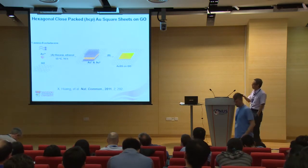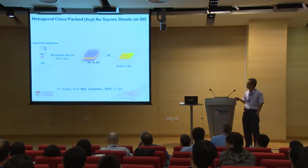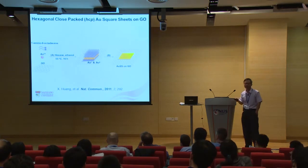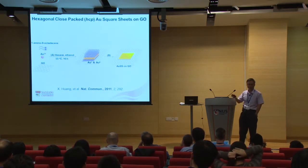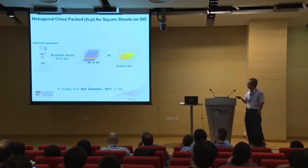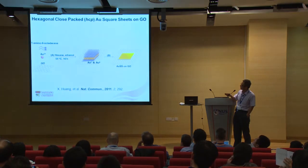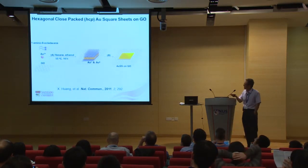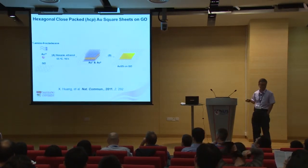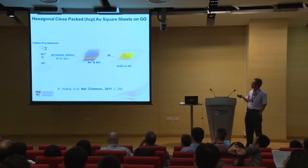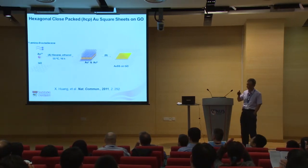By using graphene oxide as a template, we can control the size and shape of nanostructures. We found that if you mix graphene oxide gel with a gold source and heat at 55 degrees for 16 hours, you can get a very uniform and unique gold sheet structure. This gold sheet is very thin — about 2.4 nanometers — and includes about 16 gold atomic layers.